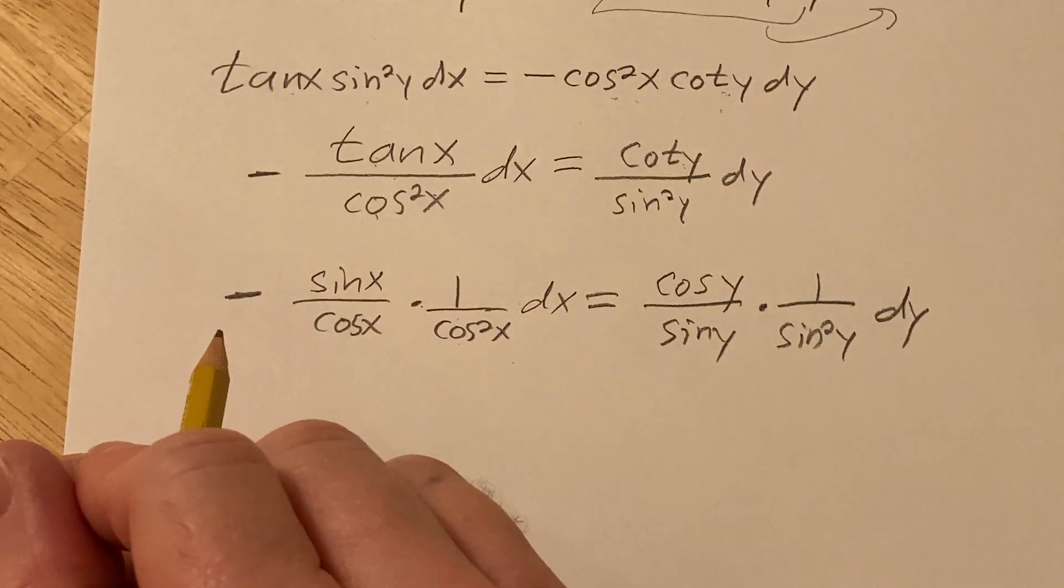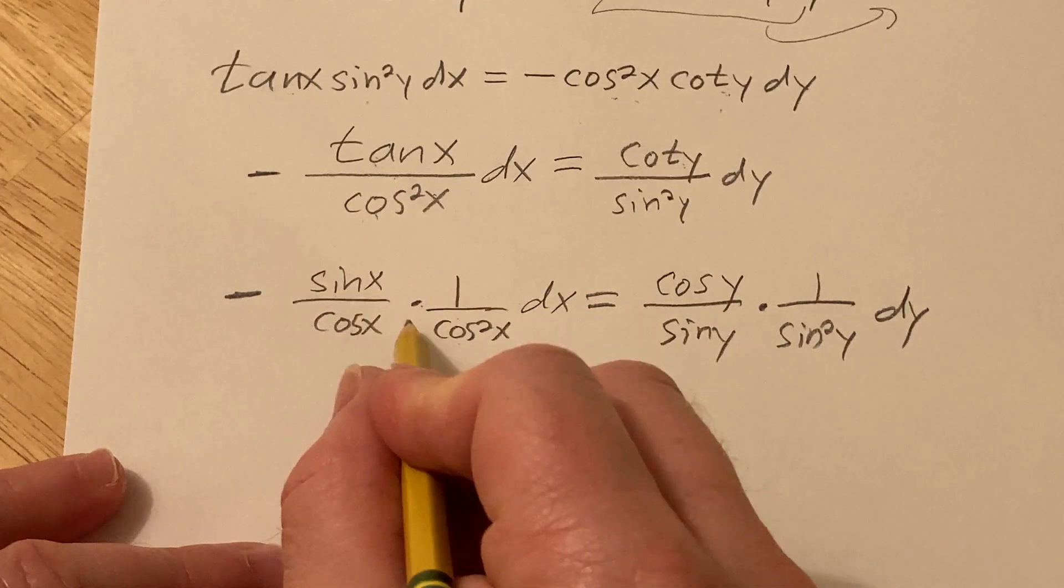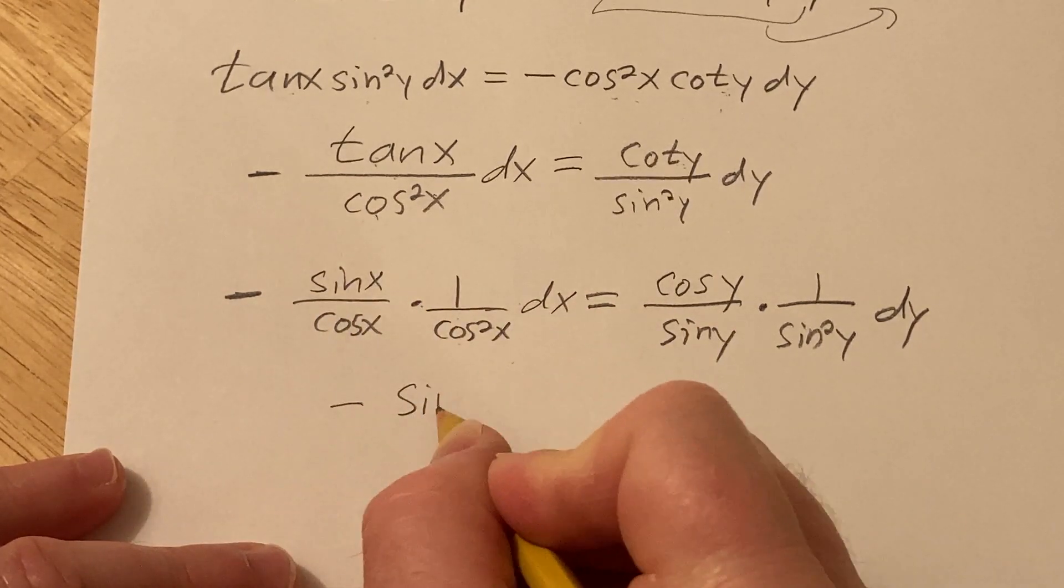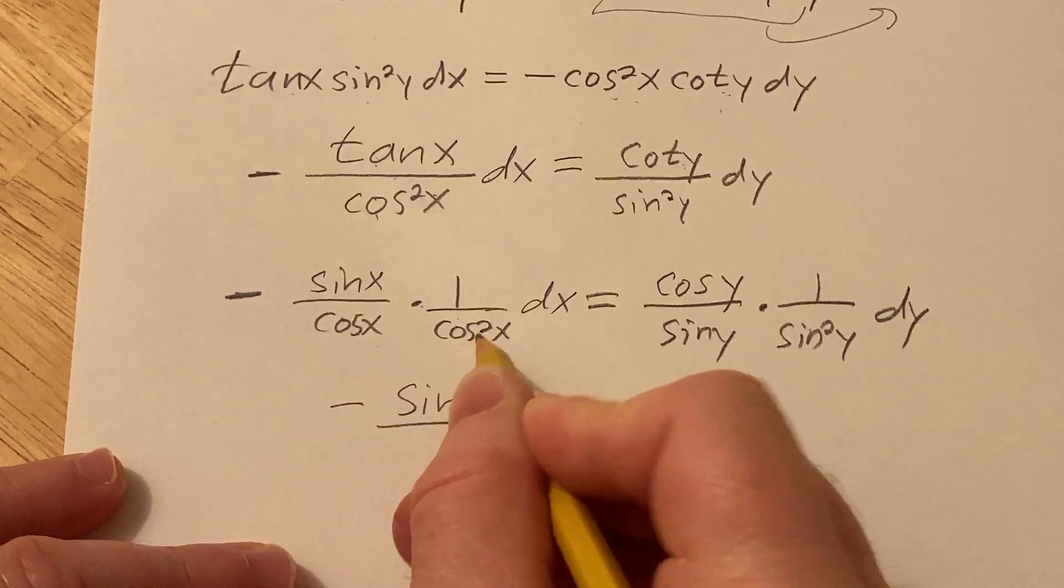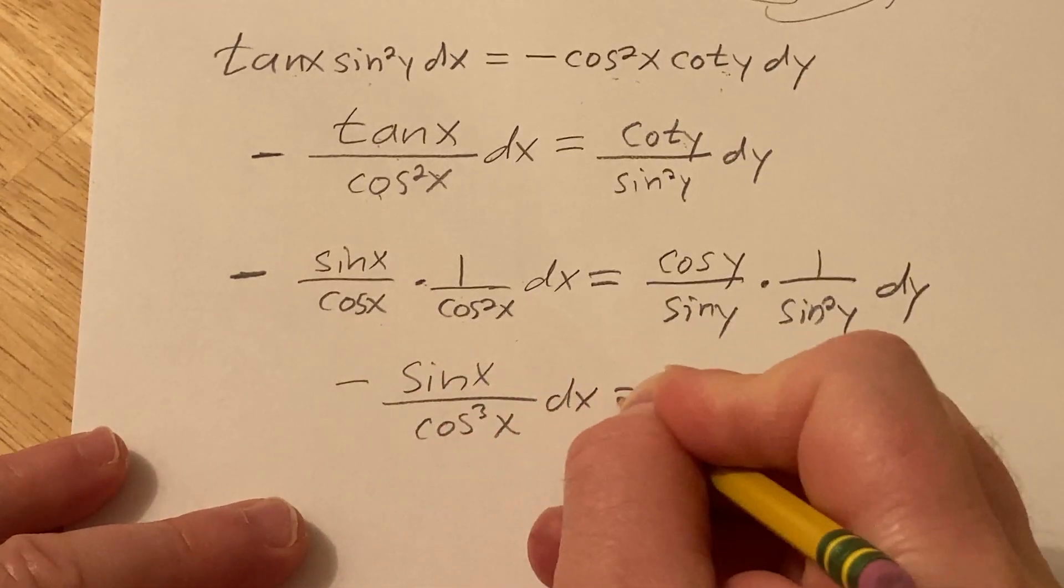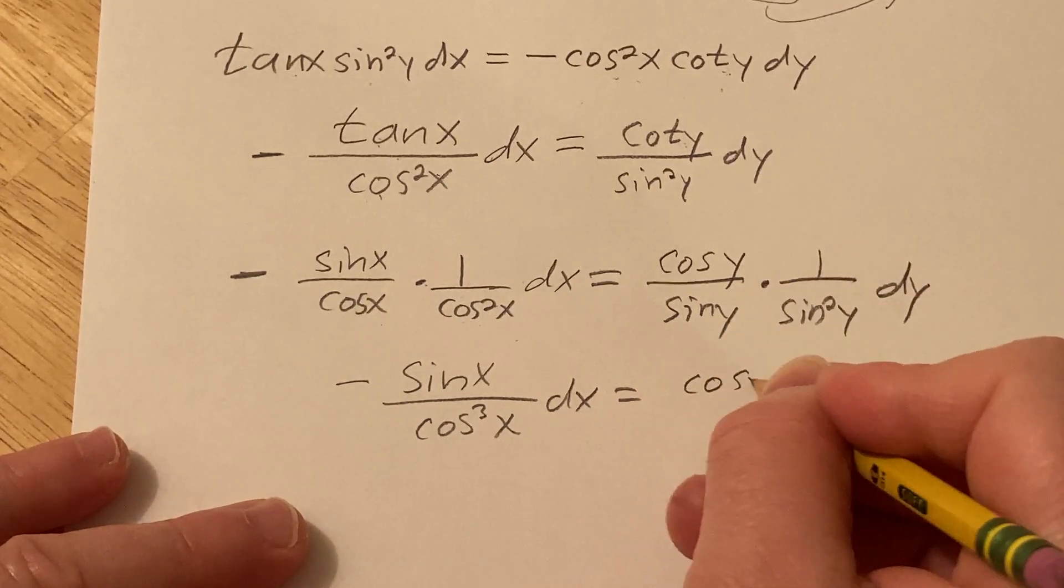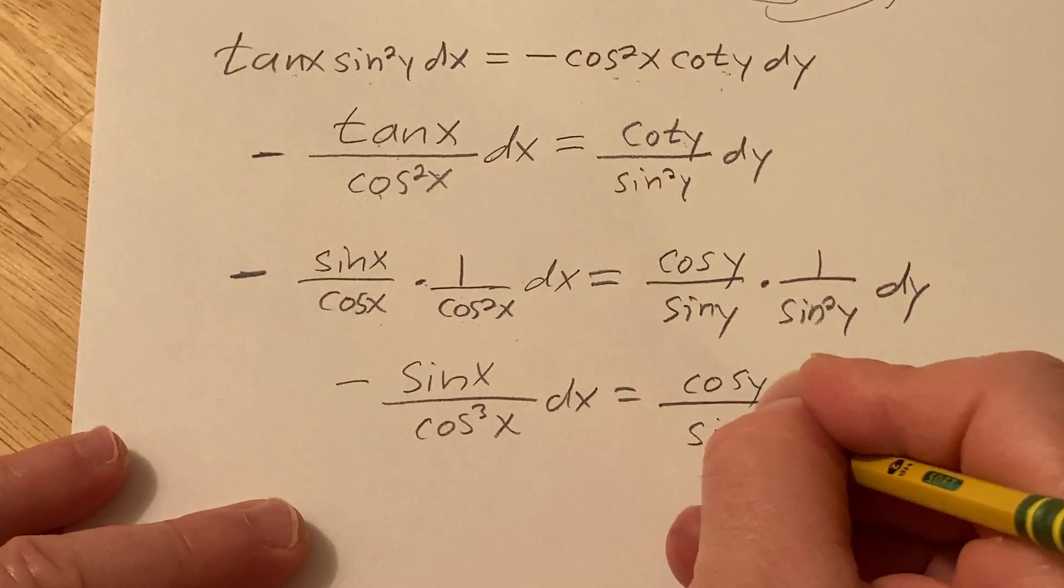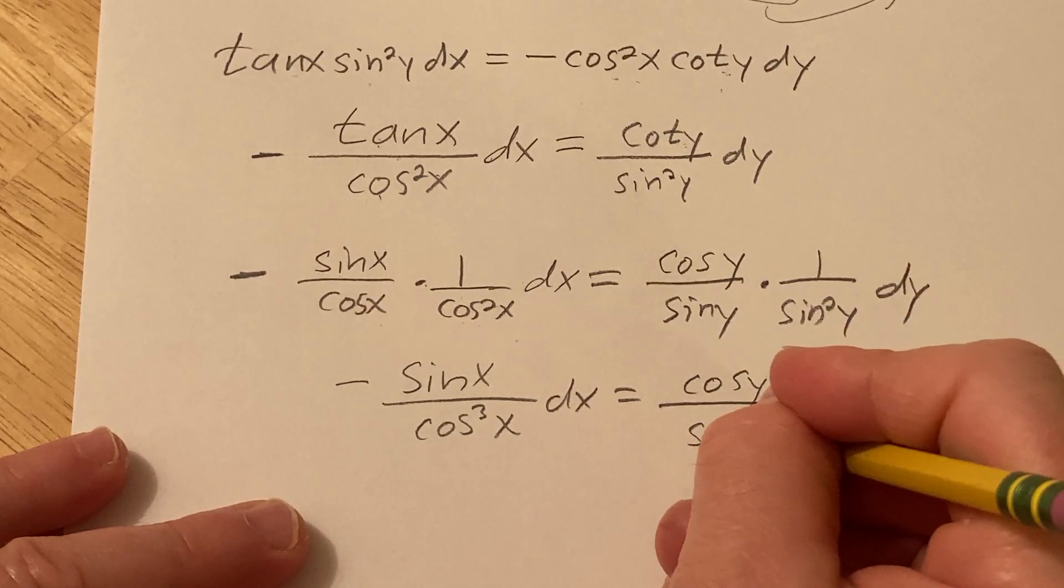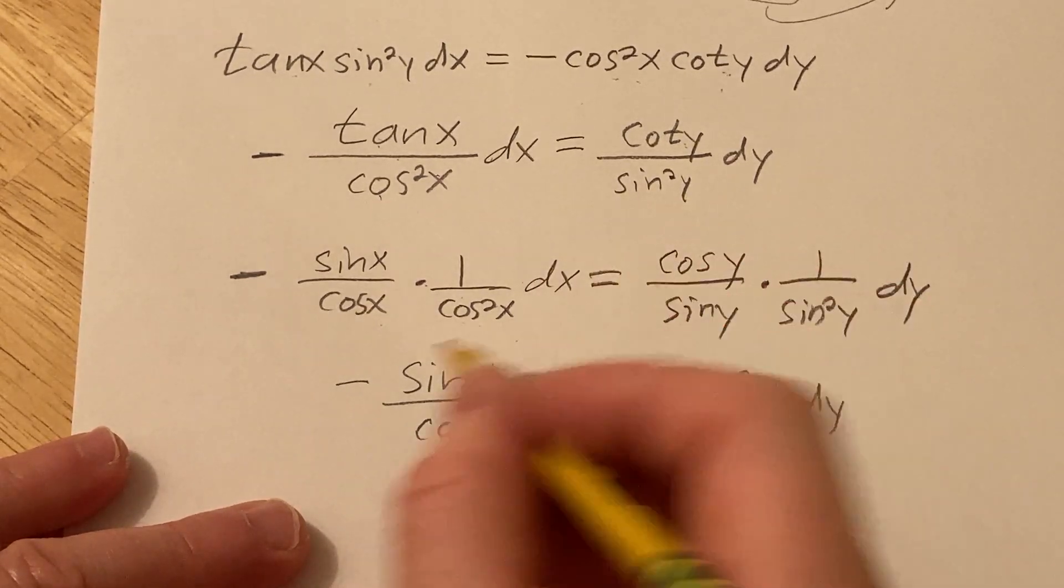Okay, so now I see it, I do, so this is going to be multiplying across negative sine x, cosine times cosine squared is cosine cubed dx, and this will be cosine y, sine cubed y dy. A little bit harder than some of the other ones I was working on, like this is a little bit more thought here.